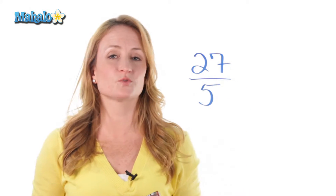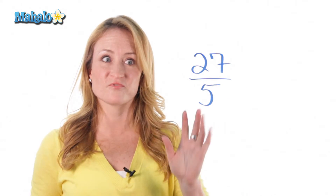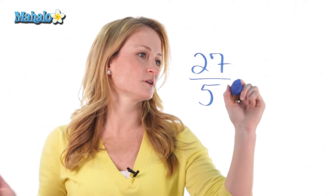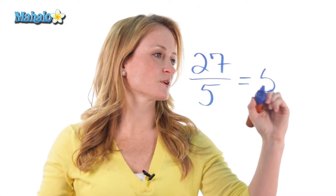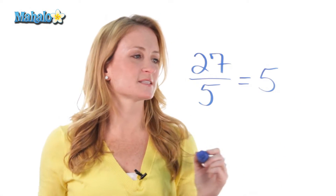So 5 can go into 27 five times. Once you figure that out — it goes in 5 times — write it really big to the side.